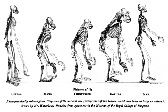The main subfields of evolutionary ecology are life history evolution, sociobiology, the evolution of social behavior, the evolution of inter-specific relations, cooperation, predator-prey interactions, parasitism, mutualism, and the evolution of biodiversity and of communities.